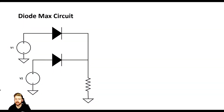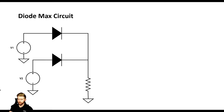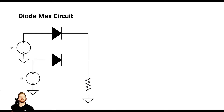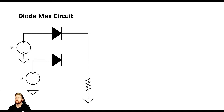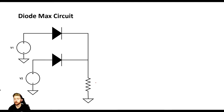Up first we have a diode max circuit. We have two diodes, each connected to a voltage source V1 and V2. We also have a current limiting resistor, because these diodes are pretty much short circuits whenever they start conducting, so we need something to limit the current. This could be something like 1k or 10k — it doesn't really matter. It's there to limit the current and also to do what's called pull up or pull down.